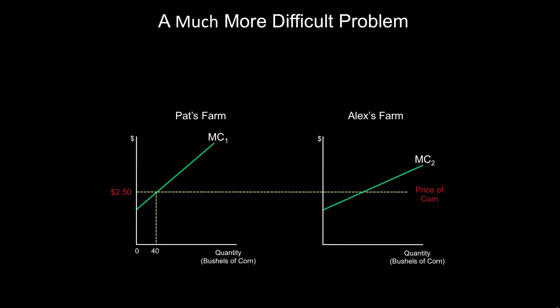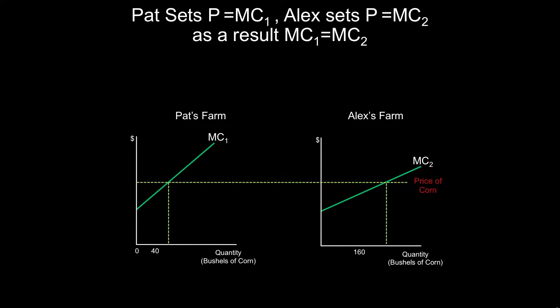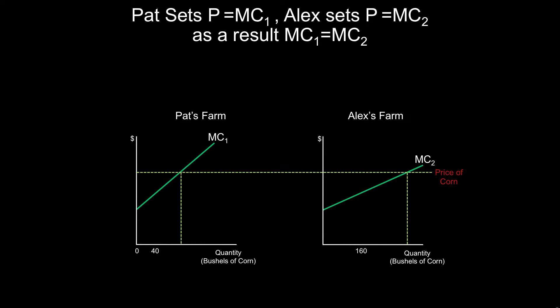Alex knows the marginal cost on Alex's farm. So Alex chooses to produce that quantity such that P is equal to marginal cost — again, purely out of self-interest, purely based upon their local knowledge. Alex produces where P equals marginal cost, equal to Alex's marginal cost. Now, because both of them are setting P equals marginal cost, and it's the same price, it follows that the marginal cost on the two farms is the same. So the market automatically allocates production across the farms and the industry in just that way that minimizes the total cost.